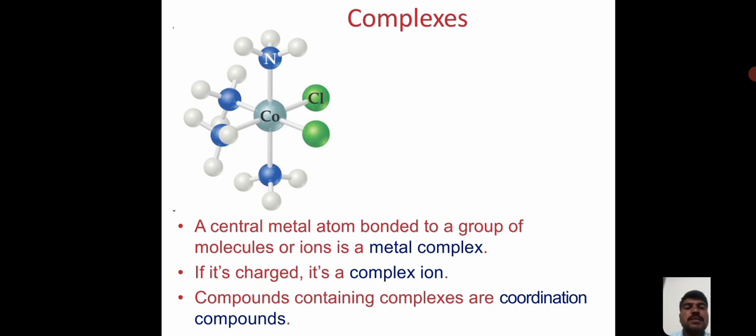Complexes: a central metal atom bonded to a group of molecules or ions is a metal complex. If it's charged, it's a complex ion. Compounds containing a complex are coordination compounds.